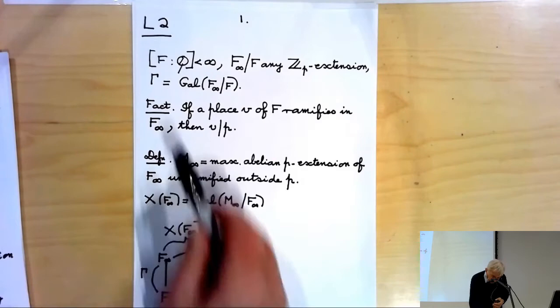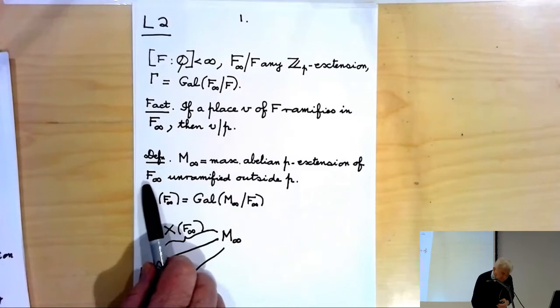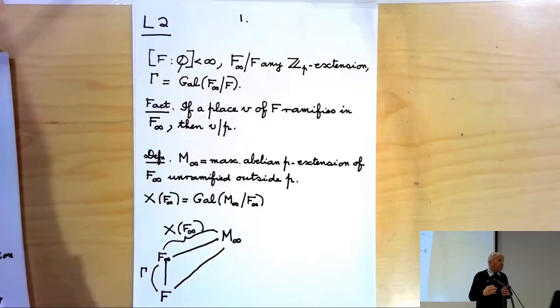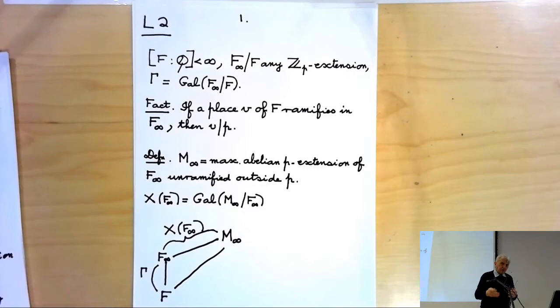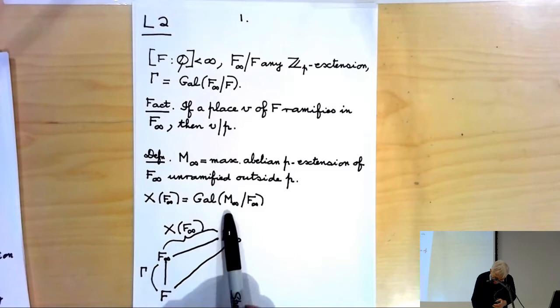So now, what I'm going to be interested in — I've got my arbitrary ZP extension — is this field M∞, which by definition is the maximal abelian P extension of F∞ that is unramified outside P. You only allow ramification at the primes of F∞ dividing P. And then I'm going to be interested in the Galois group X(F∞) of M∞ over F∞.